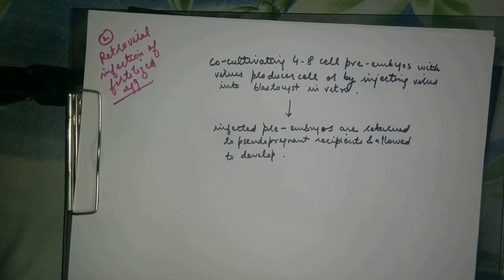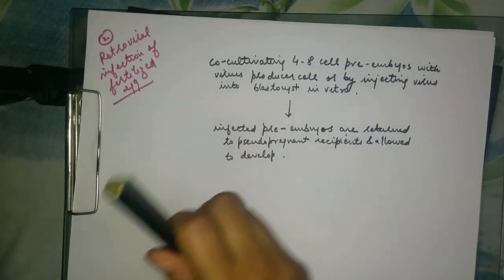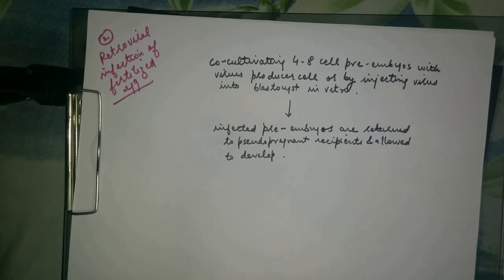The next method of transgenesis in mice is the retroviral infection of the fertilized egg. To increase the probability of expression, the gene transfer is mediated by means of a carrier or vector. Retroviruses are commonly used as vectors to transfer genetic material into the cell because of their ability to infect host cells.